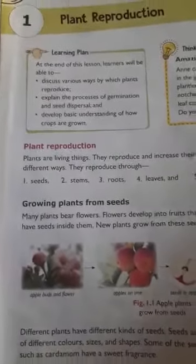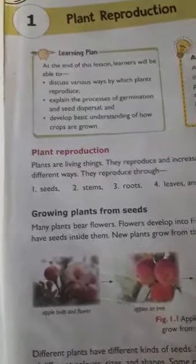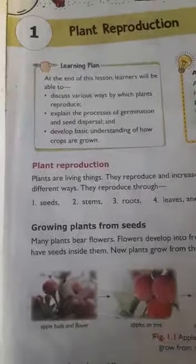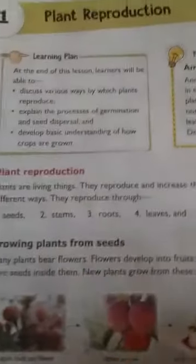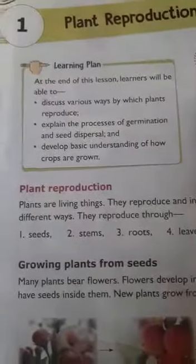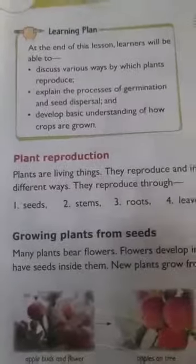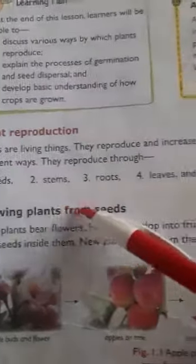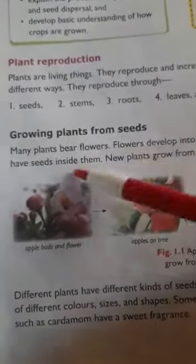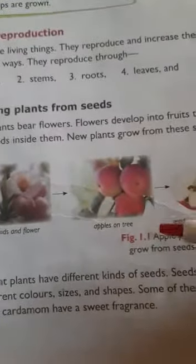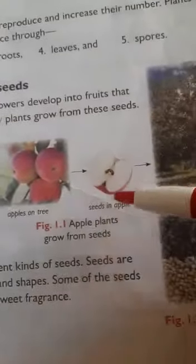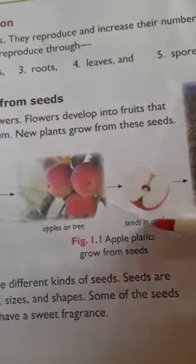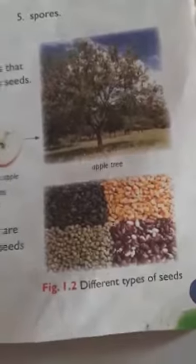In the previous two videos I have explained in detail lesson number one and two. Plant reproduction — what is reproduction? It is producing the young ones of their own kind. Plants reproduce through seed, stem, root, leaves, and spores. An example of growing plants from seed is the apple tree — apple trees grow from seed. We have seen some different types of seeds.